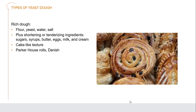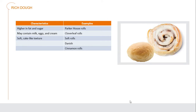Rich dough still has the flour, yeast, water, and salt as the base, but we add shortening or other tenderizing ingredients such as butter, sugars, syrups, eggs, milk, and cream. These give it more of a cake-like texture as opposed to a firmer bread texture. Rich doughs are higher in fat and sugar and may contain milk, eggs, and cream — always bear in mind allergy concerns. Examples include parker house rolls, clover leaf rolls, soft rolls, Danish, and cinnamon rolls.